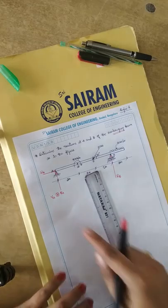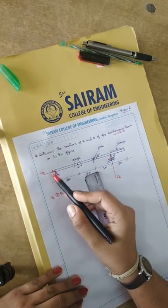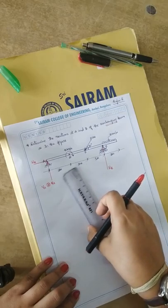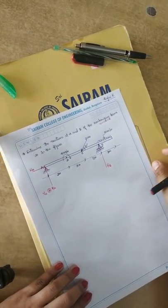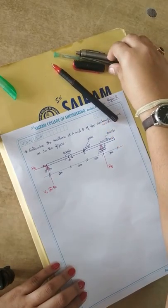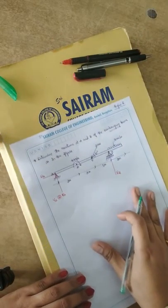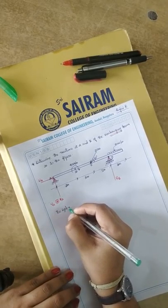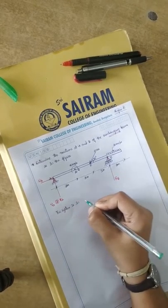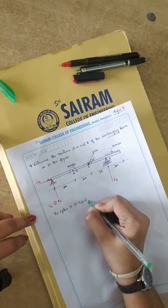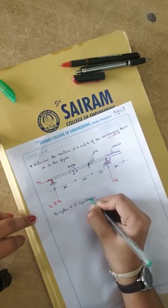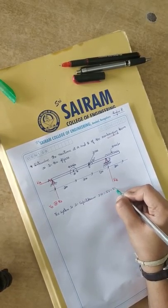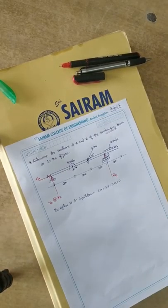I have marked the reactions. At the hinged support you have two reactions: HA and RA. At the roller support you have one reaction that is RB. For the details, it will be covered in the theory part. We will start the problem now. The first step is to write the conditions — the system is in equilibrium — that is, ΣH = ΣV = ΣM = 0. This is the equation we have.